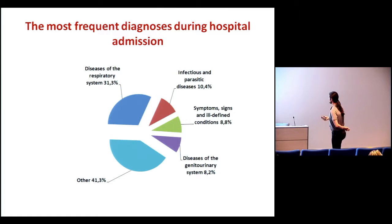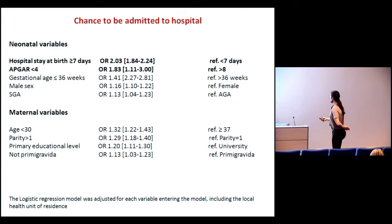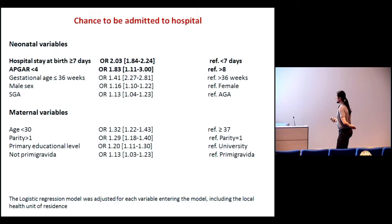If we look at hospital admissions, these are the primary diagnoses — mainly diseases of the respiratory system and other infective diseases, which is consistent with what we saw in the drug prescription profile in the outpatient setting. The profile in the multivariate analysis was quite similar to the one observed for specialist visits, with greater importance of neonatal variables — in particular, hospital stay at birth higher than seven days and low APGAR score. There is also a small influence of low maternal age.